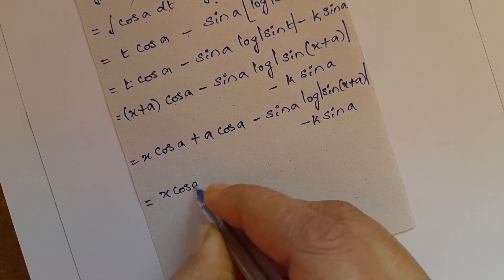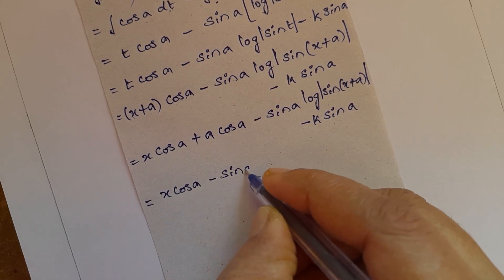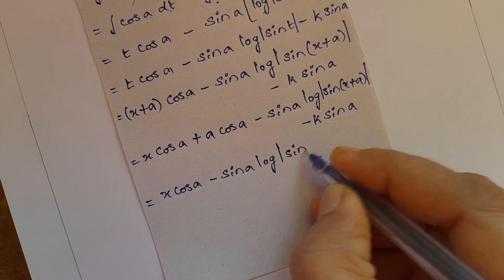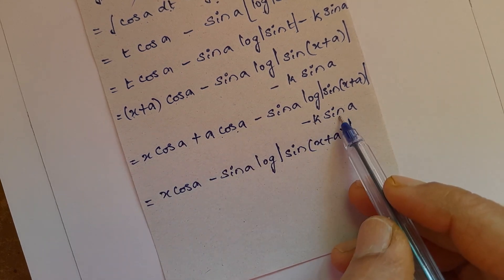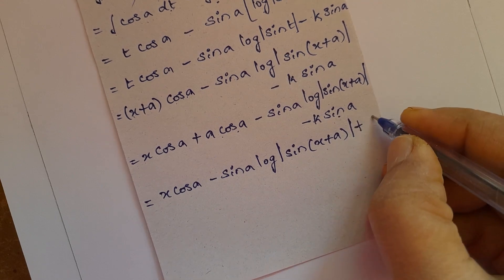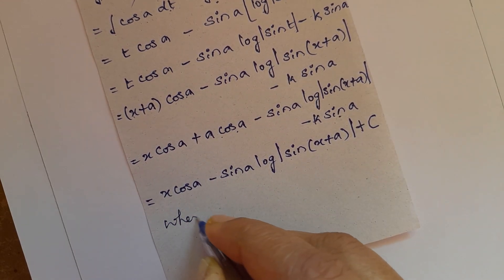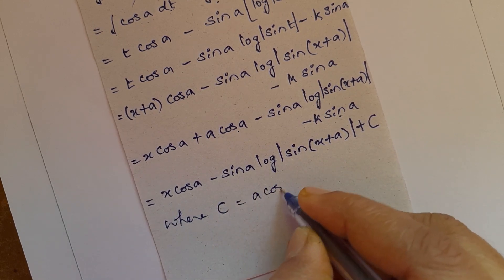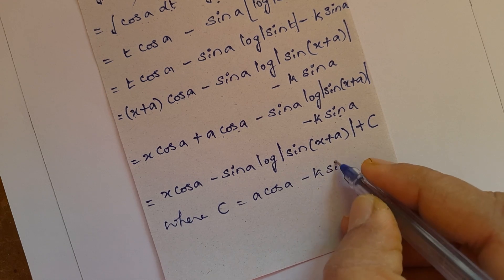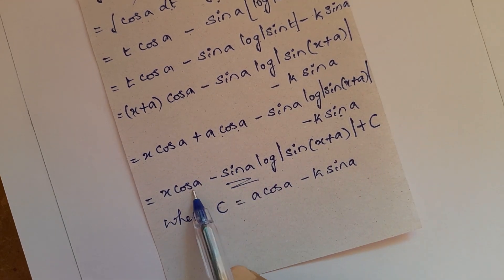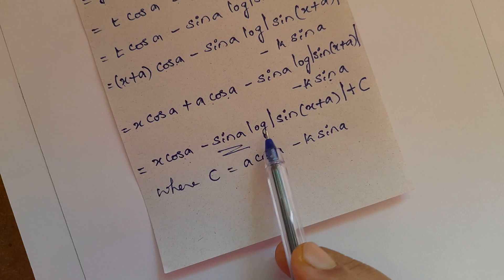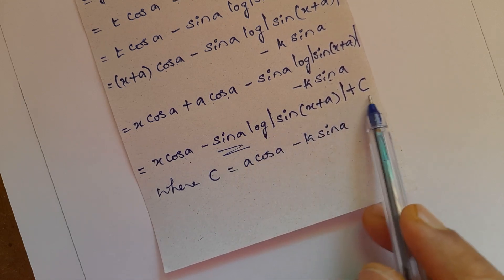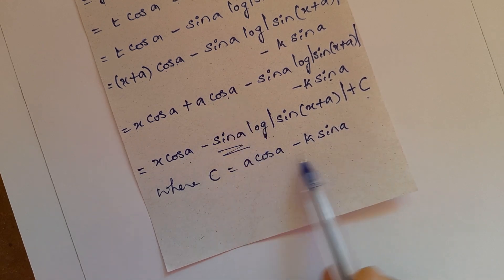Since x plus a times cos a minus k sin a can be grouped as a constant C, where C equals a cos a minus k sin a, the final answer is: the integral of sin x divided by sin(x plus a) dx equals x cos a minus sin a log|sin(x plus a)| plus C.